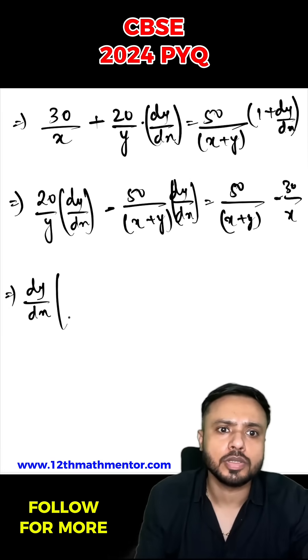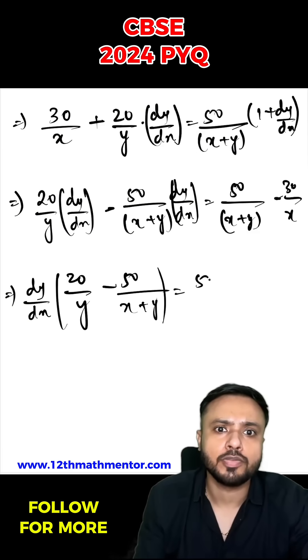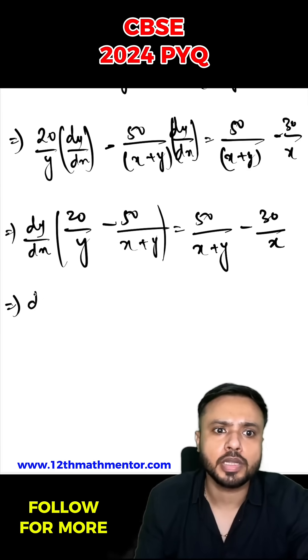So now I can take dy by dx common. So inside the bracket, I'll be left with 20 upon y minus 50 upon x plus y equals to 50 upon x plus y minus 30 upon x. So now I'm going to take the LCM both sides.